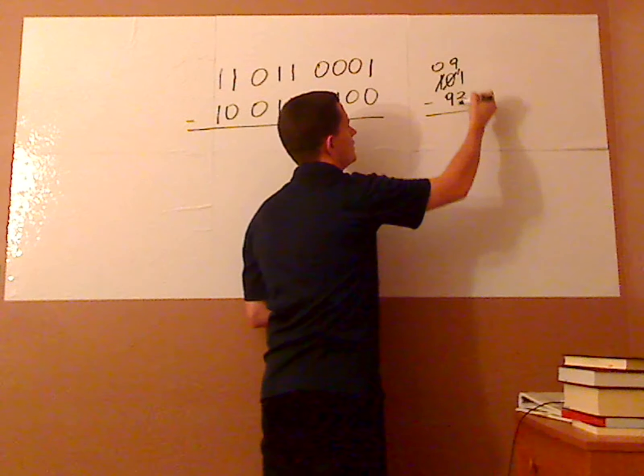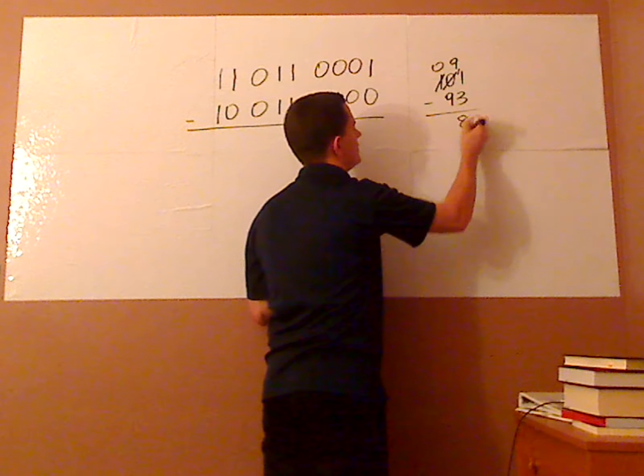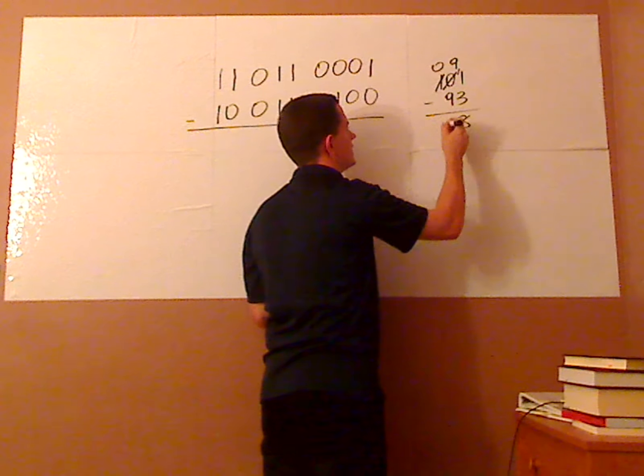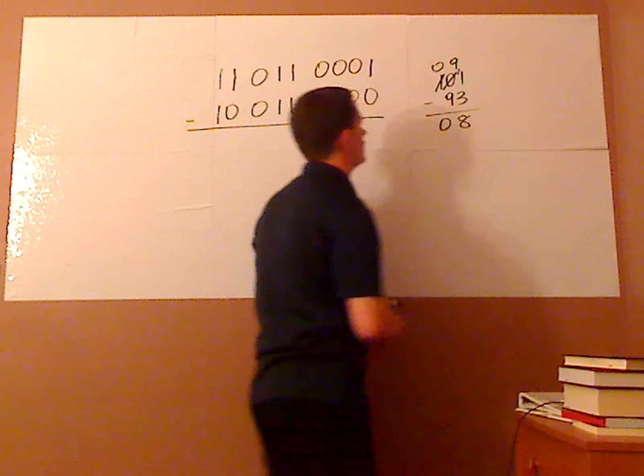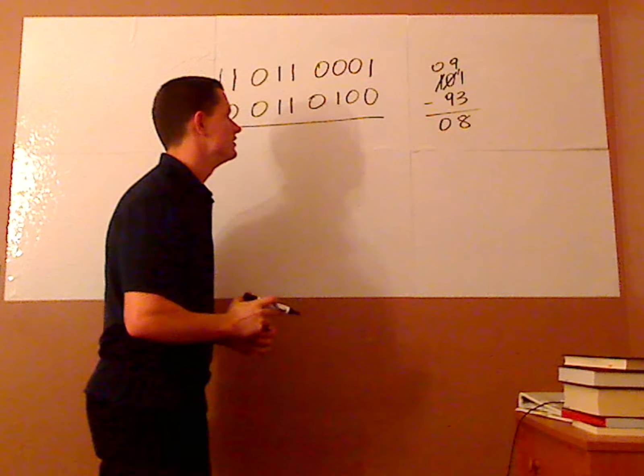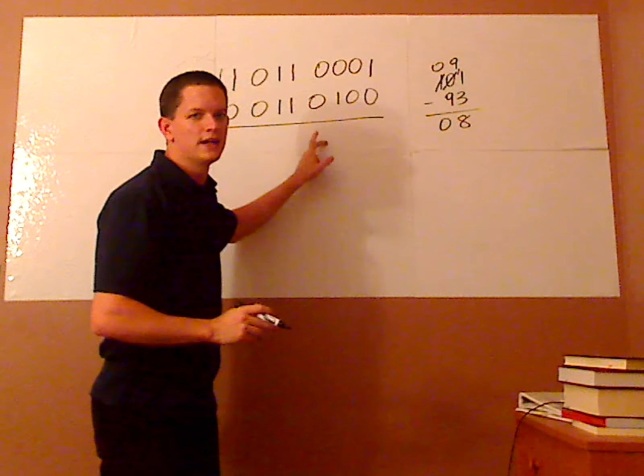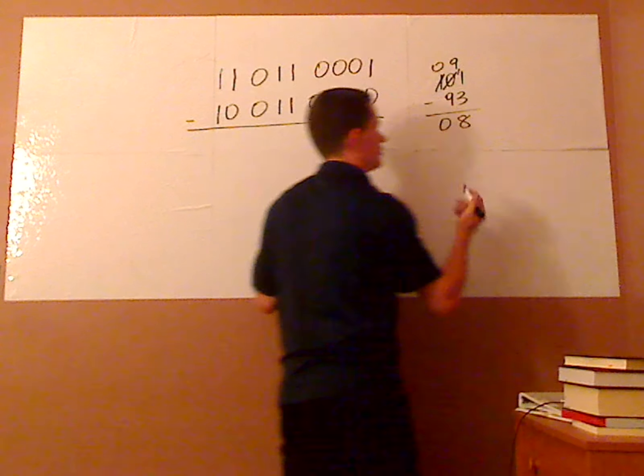So you subtract this, 11 minus 3 is 8 and then 9 minus 9 is 0. So 101 minus 93 is 8. With binary, it's a little tricky.